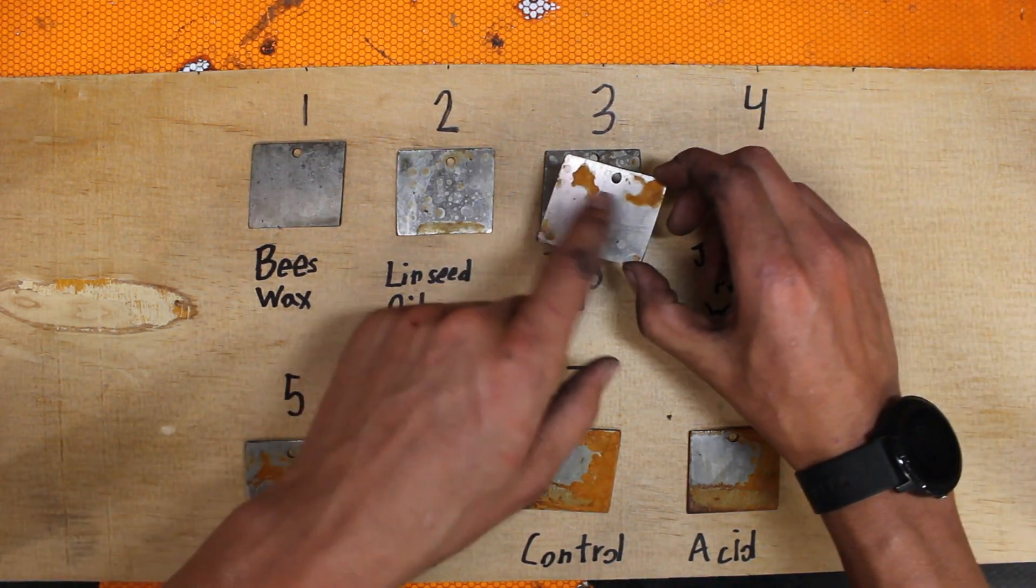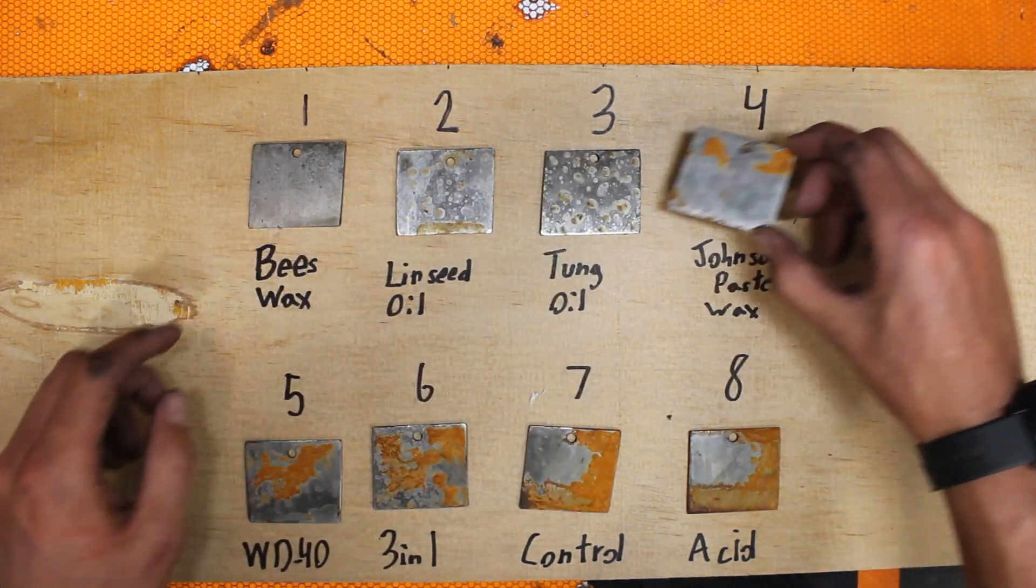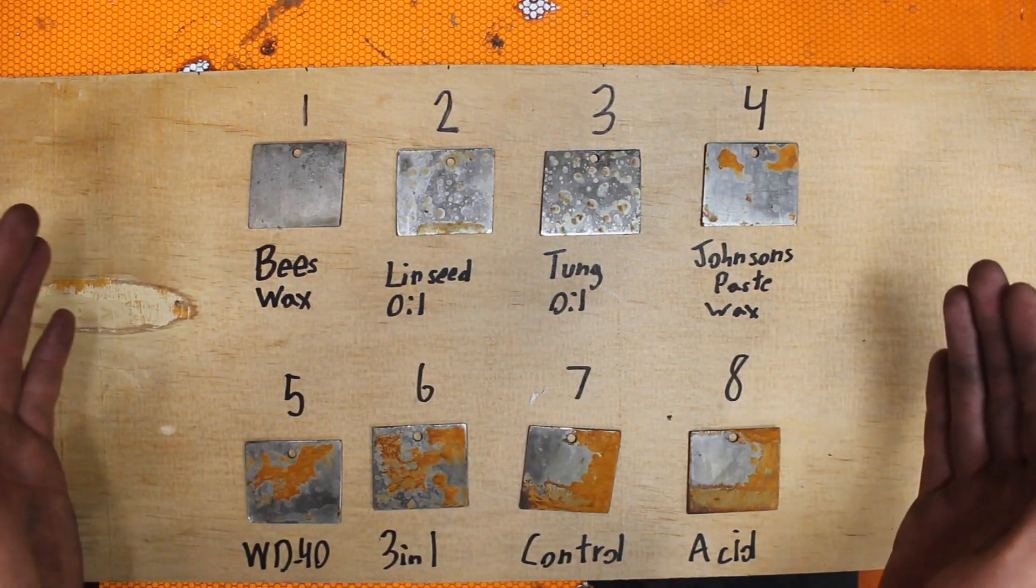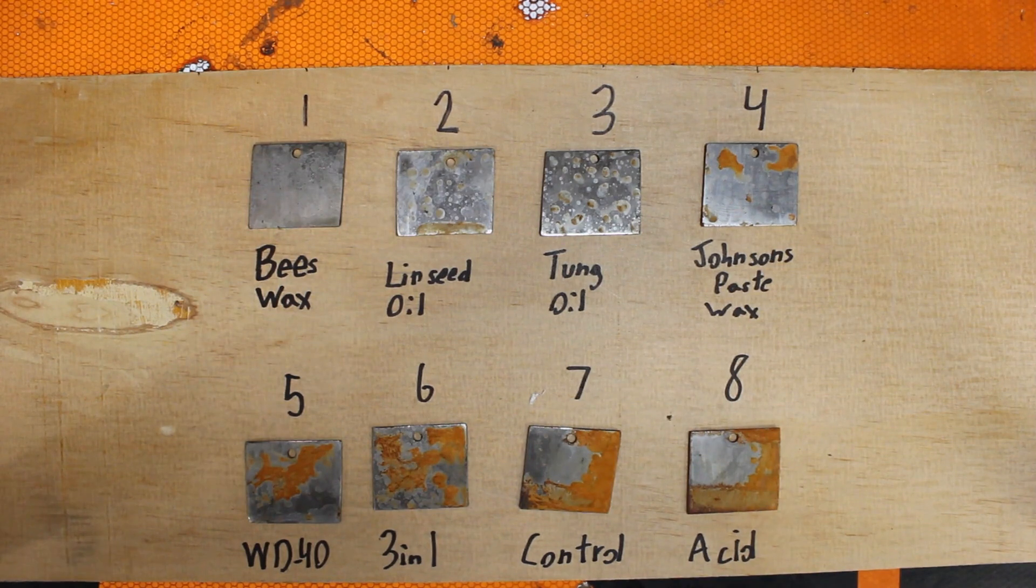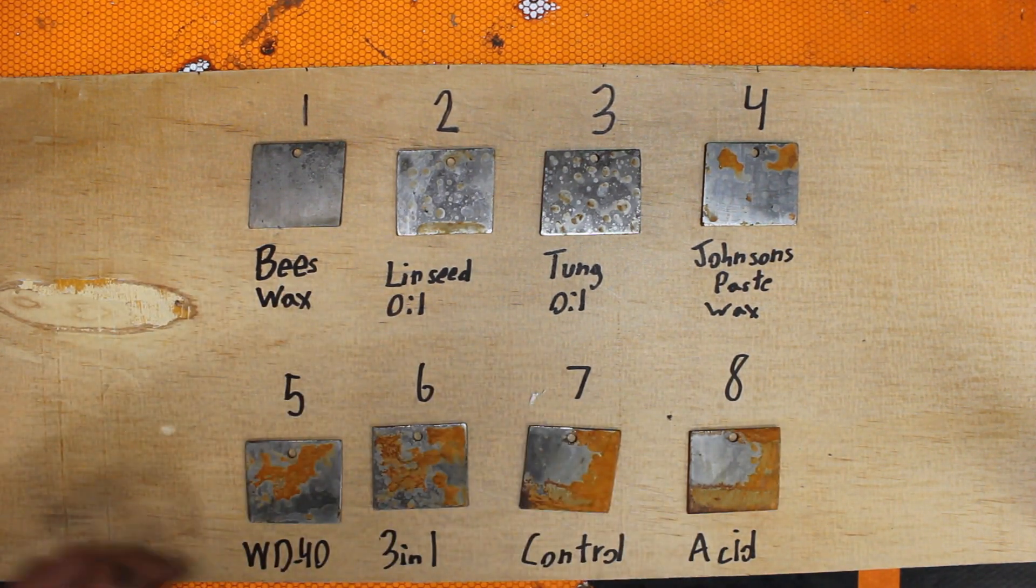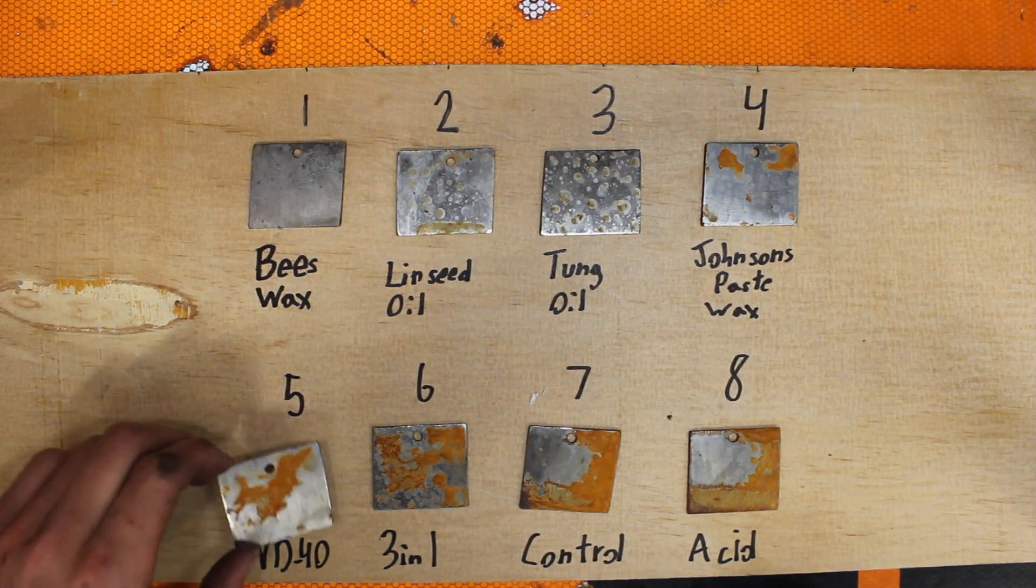These four up here I think would work great because you remember guys these are outside getting sprinkled with the hose three times a day for a week and that's how they held up. WD-40 kind of surprised me, it did very well, just a little bit, a little bit really bad rust spot right there but otherwise did great.